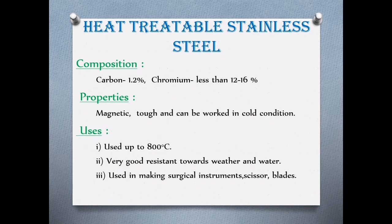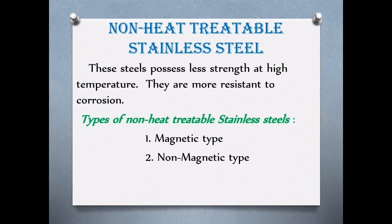Heat-treatable stainless steel has 1.2% carbon and 12–16% chromium present. Its properties are magnetic, tough, and suitable for cold conditions. It is used at up to 800 degrees in weather and water-resistant applications. Uses include surgical instruments, scissors, and blade cells.